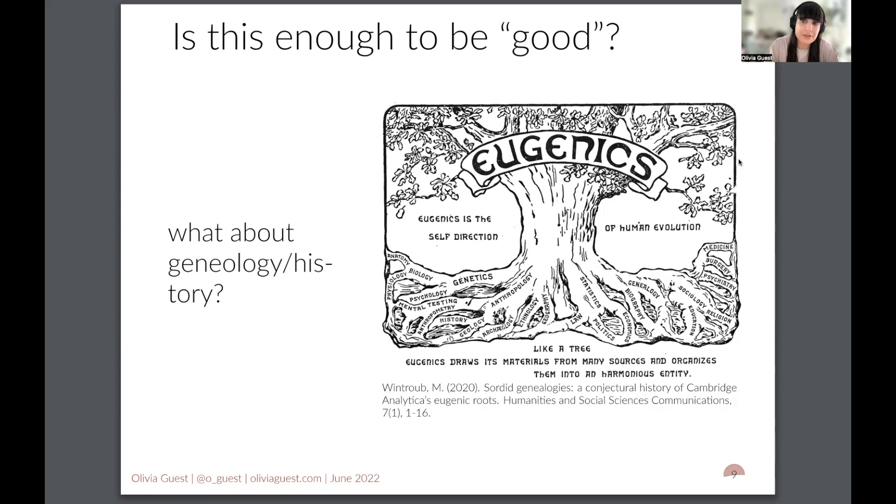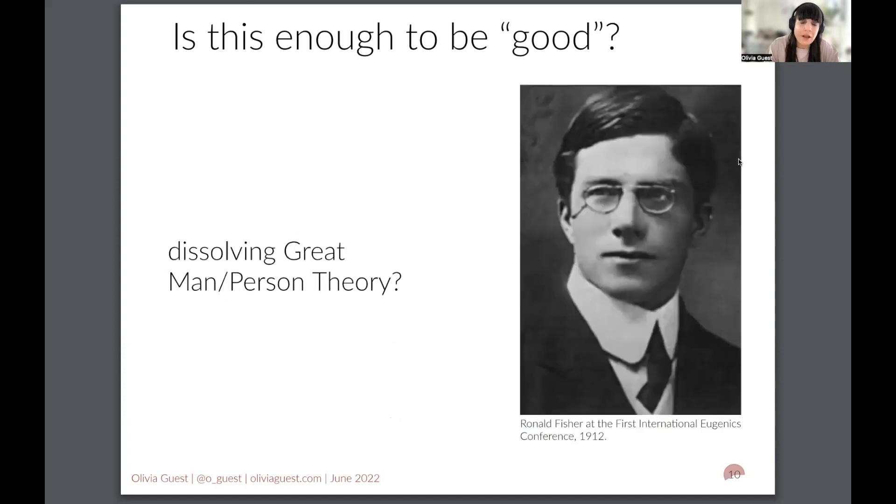So I think for something to be good, we need to check that it's always been good in a critical way and understand how it might have less good elements. What about theories that don't dissolve great man theory? So shouldn't we want to stop that from happening? I'm not sure we've really managed that in many ways.